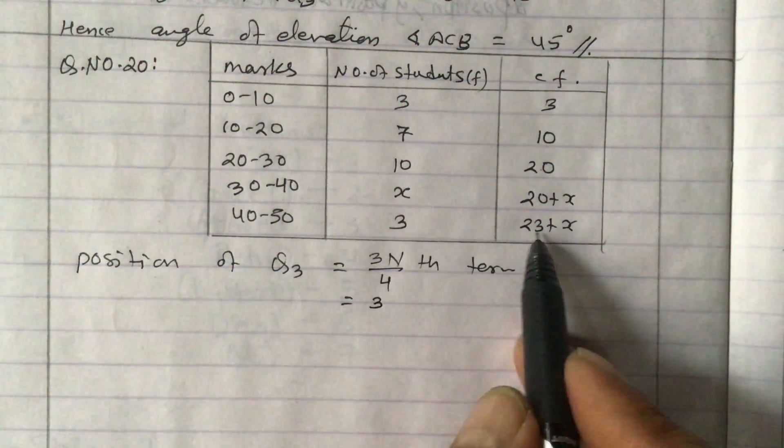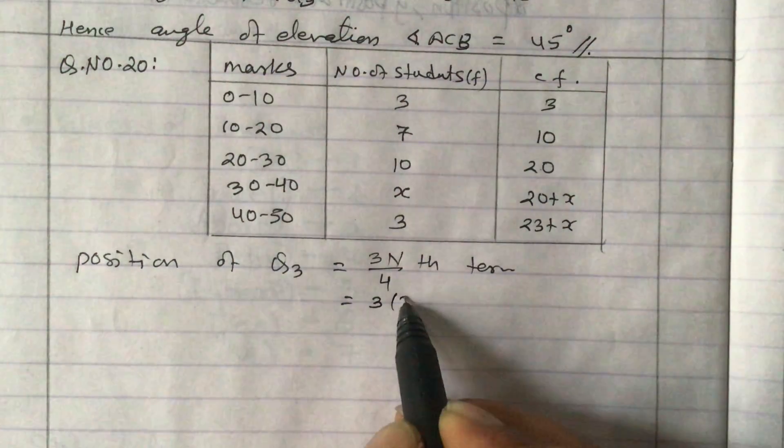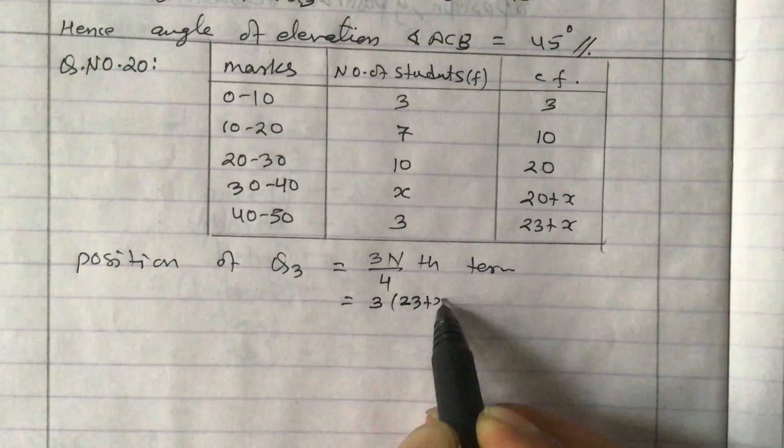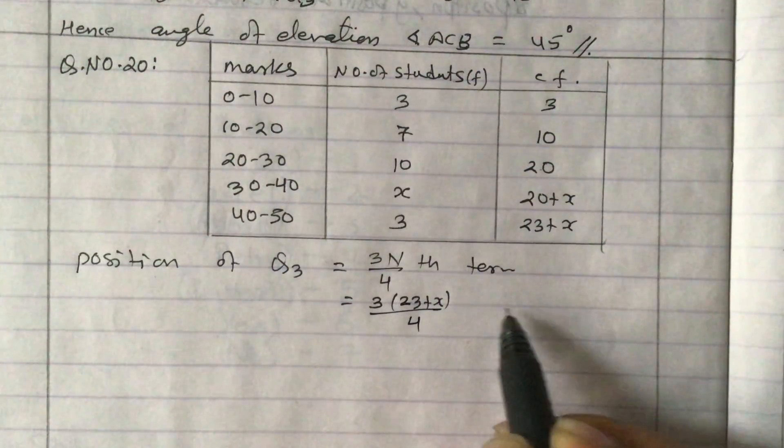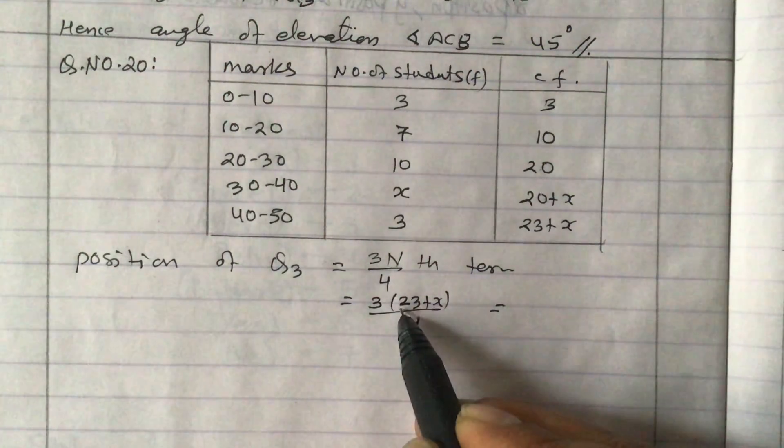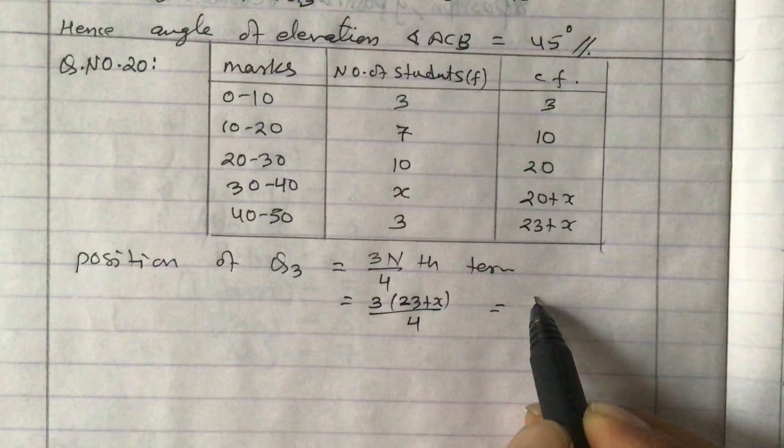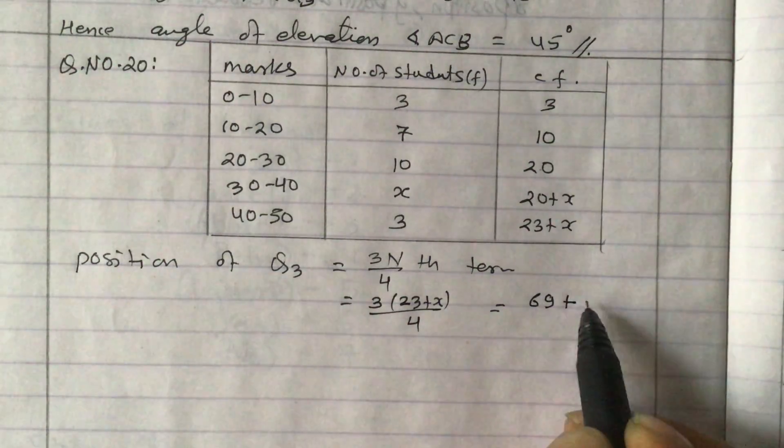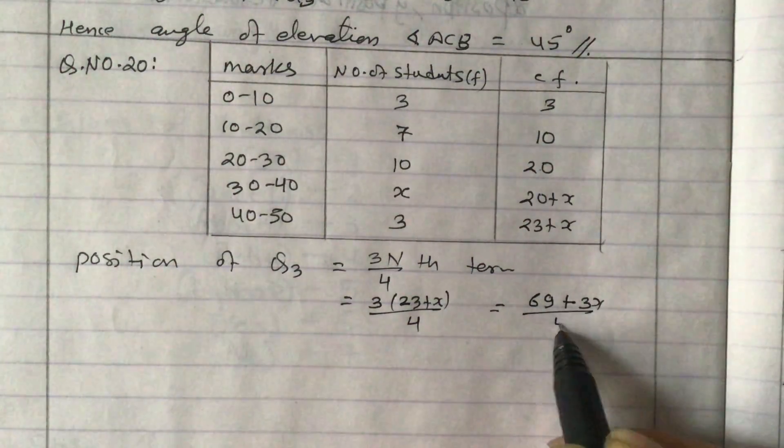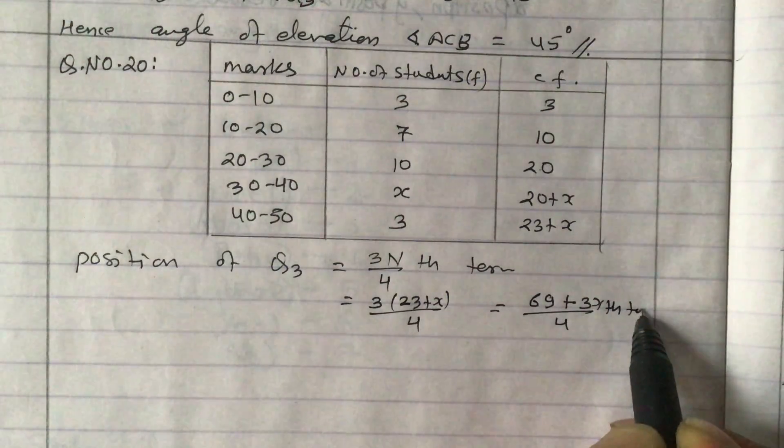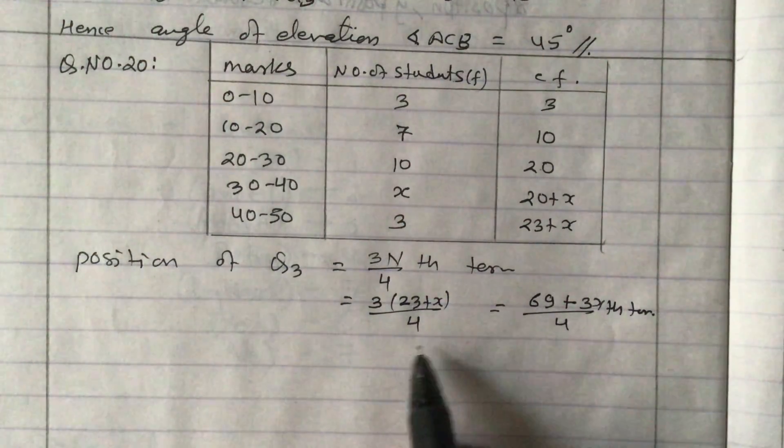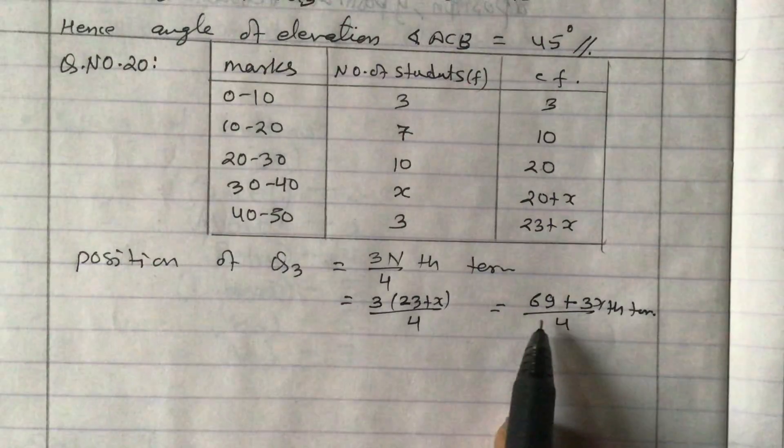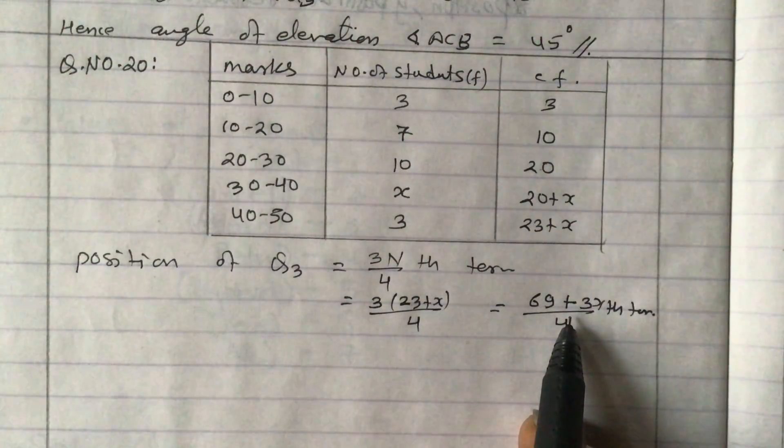N here is 23 plus x divided by 4, so this can be written as 3 times (23 plus x) by 4, which is (69 plus 3x) by 4th term. This is the 3N by 4 value. From here we cannot find out the quartile class.